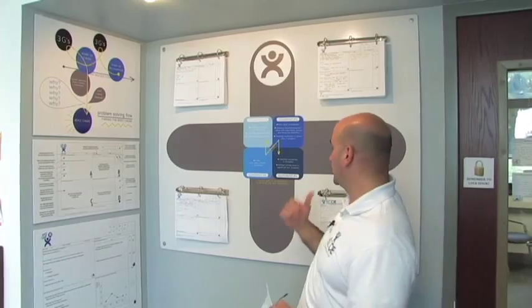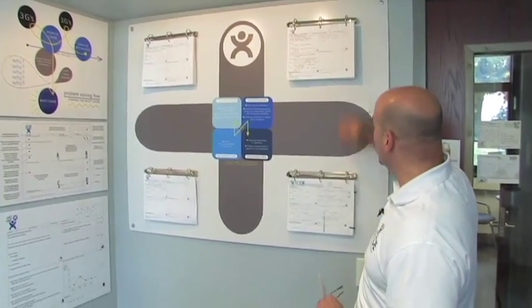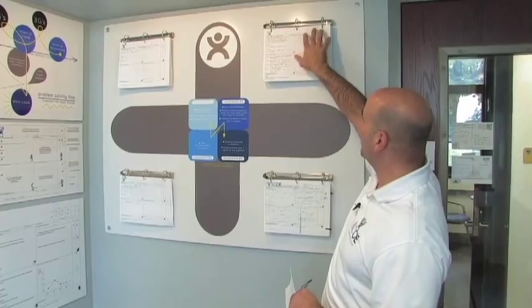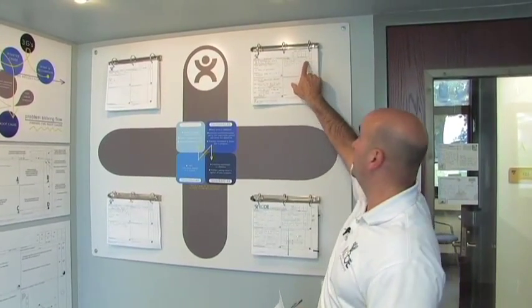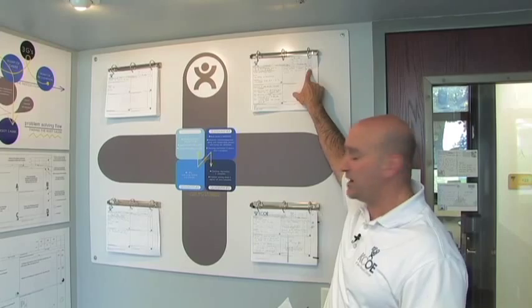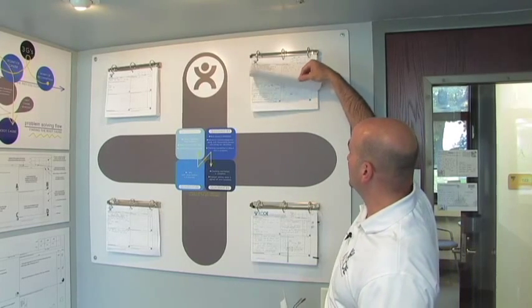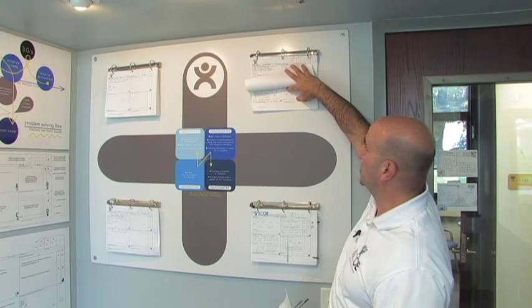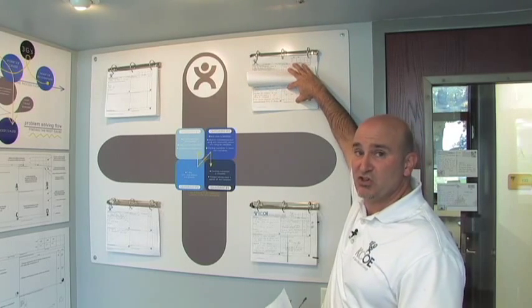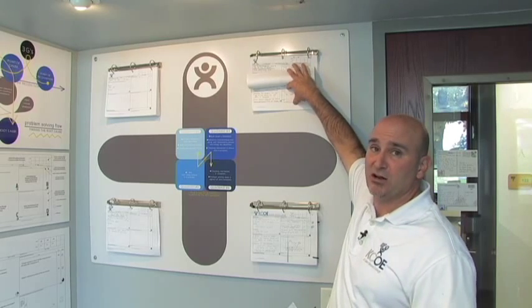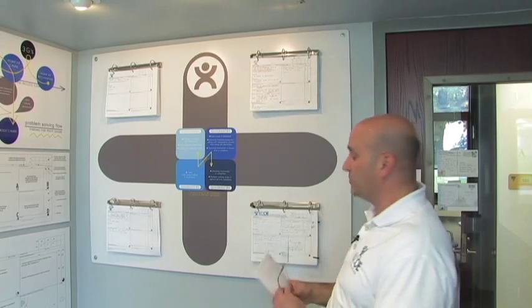The other thing I look at on the problem solving board is the third quadrant: I'm looking for actions that aren't finished yet or were planned to be completed by a certain date. I might look at a checking mechanism and notice that a problem hasn't been checked on even though it was planned for a certain period. I might pull that problem solving sheet off — I have an example here that I'll take to my daily meeting — and make sure I hand it back to Steve because Steve needs to make a check and update the checking mechanism.